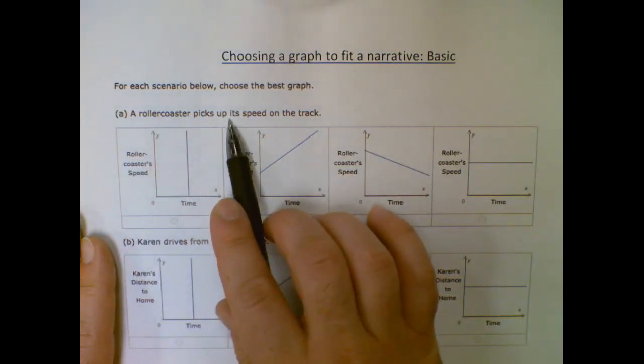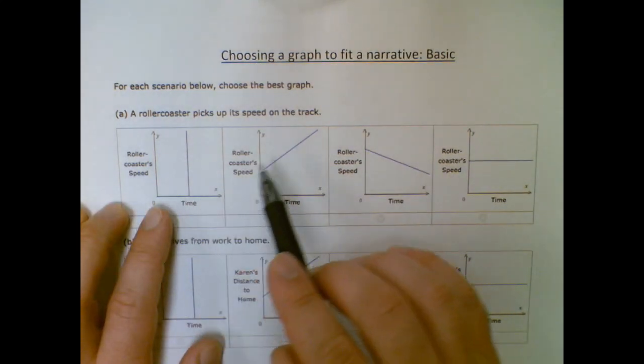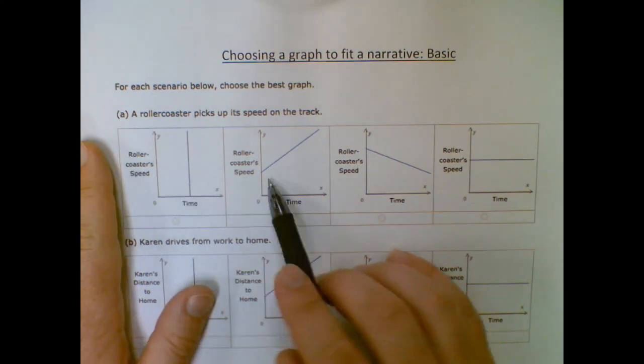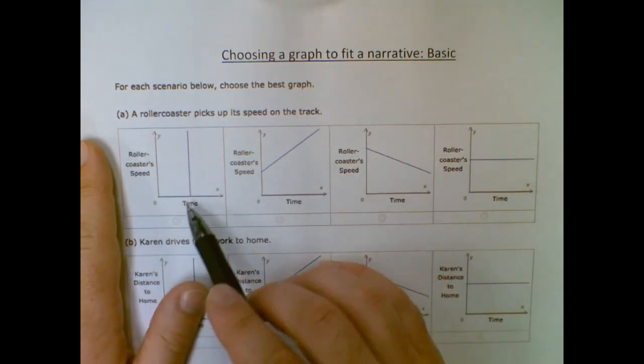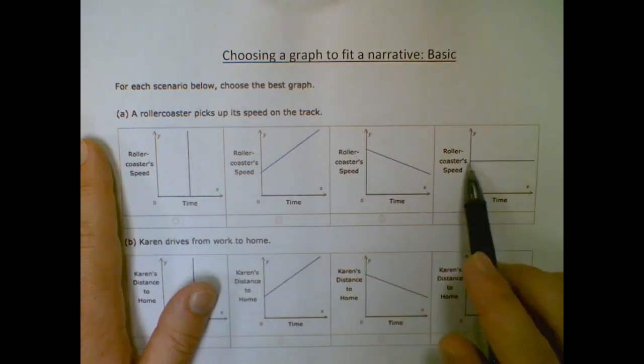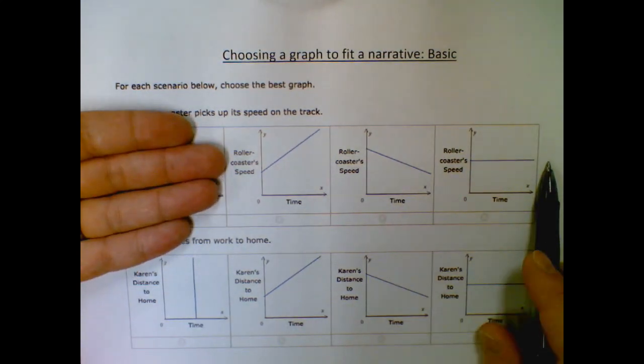A roller coaster picks up its speed on the track. So as we're going along, we're getting faster and faster, so my speed should be doing either this one. I don't even know how to describe this one. This one doesn't make any sense. This one's going up, this one's going down, and this one's staying steady. So I know that one's not going to work because it's not even a function. It doesn't make any sense.